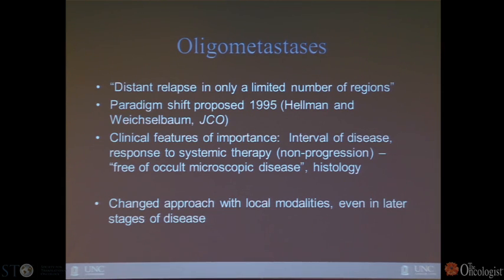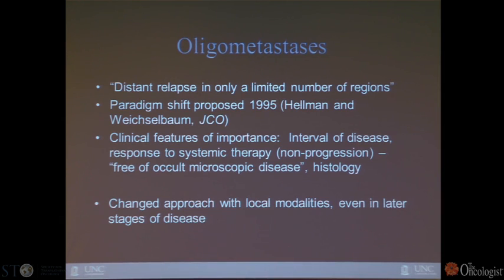There are some features of clinical importance in this entity called oligometastasis. We know that histology and the sites of metastasis matter, that the interval of disease matters, and that the response to systemic therapy — at least non-progression — also matters, because we want to be convinced that the patient is free of occult microscopic disease. This has really changed our approach with local modalities even in the face of stage 4 disease.